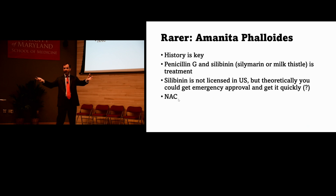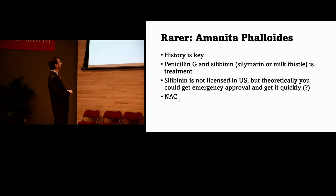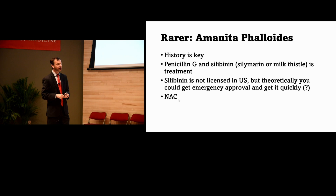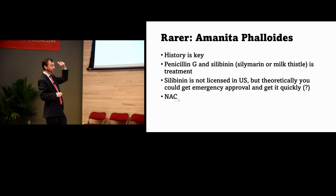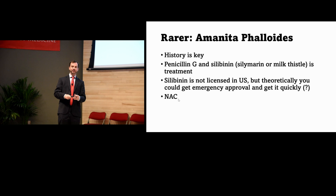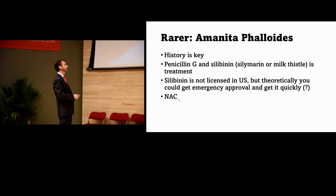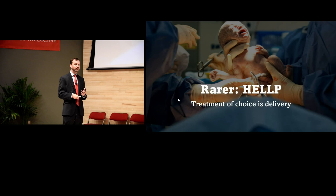Amanita phalloides mushroom ingestion causes acute liver failure — take a good history. The treatment is penicillin G and silibinin, though silibinin is not licensed in the U.S. This is also an indication for NAC. For acute fatty liver of pregnancy and true full-blown HELLP syndrome, delivery is typically the treatment — talk to your obstetrician and hepatologist, as these are true emergencies.